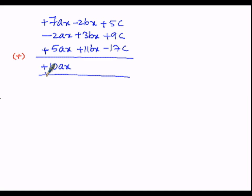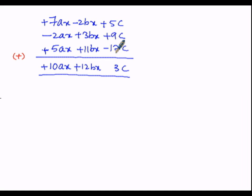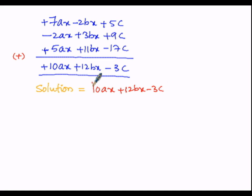For the bx column: 11bx is positive and 3bx is positive — plus of plus of plus — so 11 plus 3 is 14bx, then minus 2bx gives 12bx positive. For the c column: 5c plus 9c — plus of plus — gives 14c, then minus 17c: since plus of minus is minus, 17c minus 14c is 3c, and since 17 is greater its sign is minus, giving minus 3c. Therefore the solution is 10ax plus 12bx minus 3c.